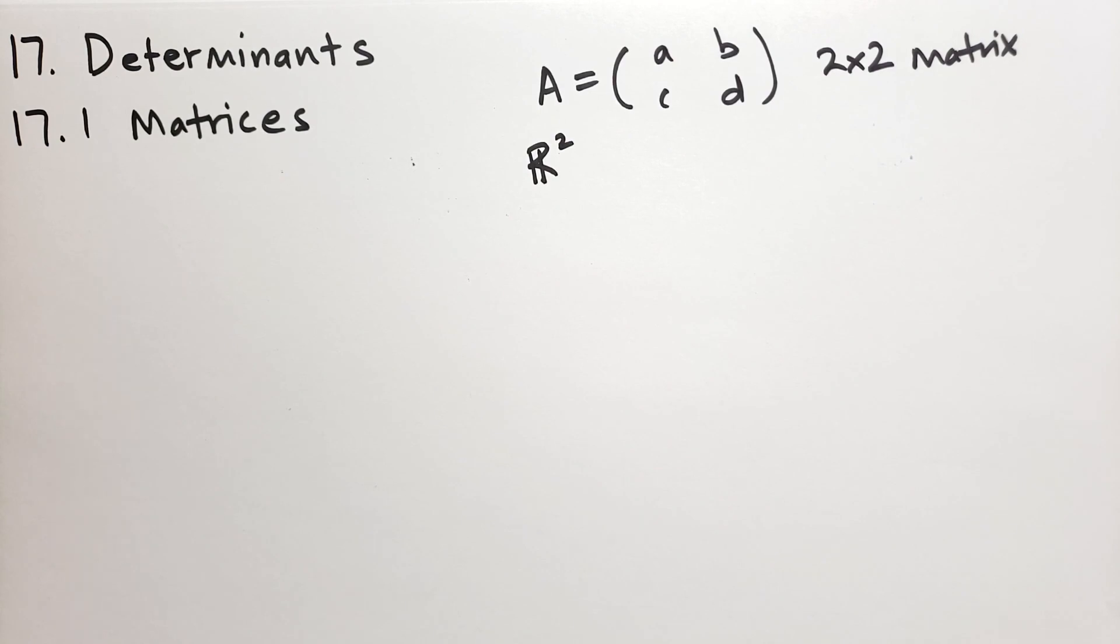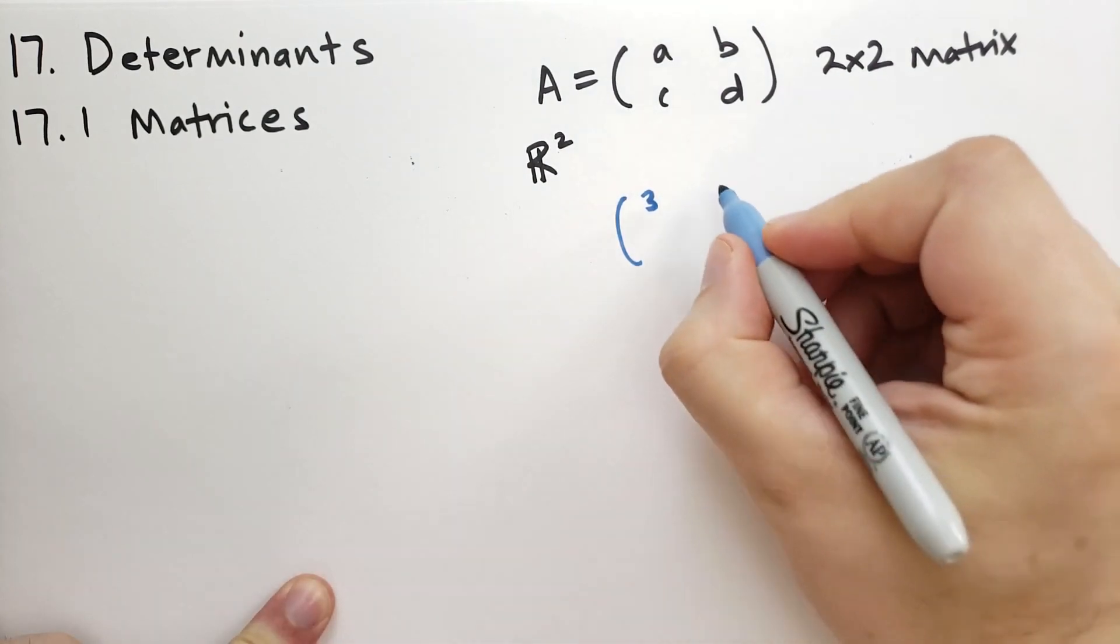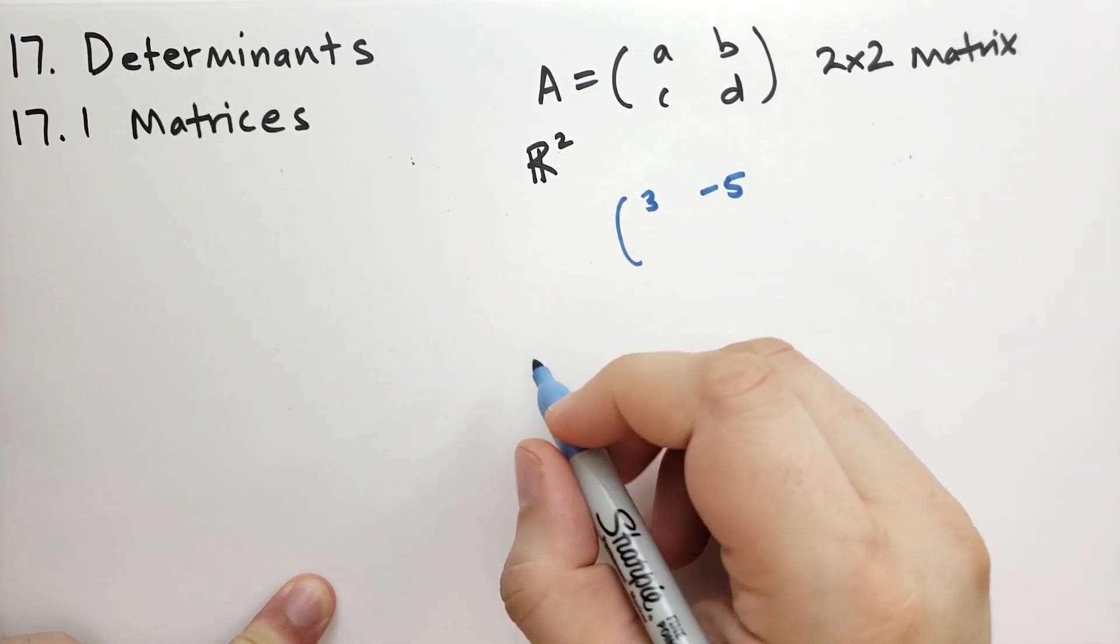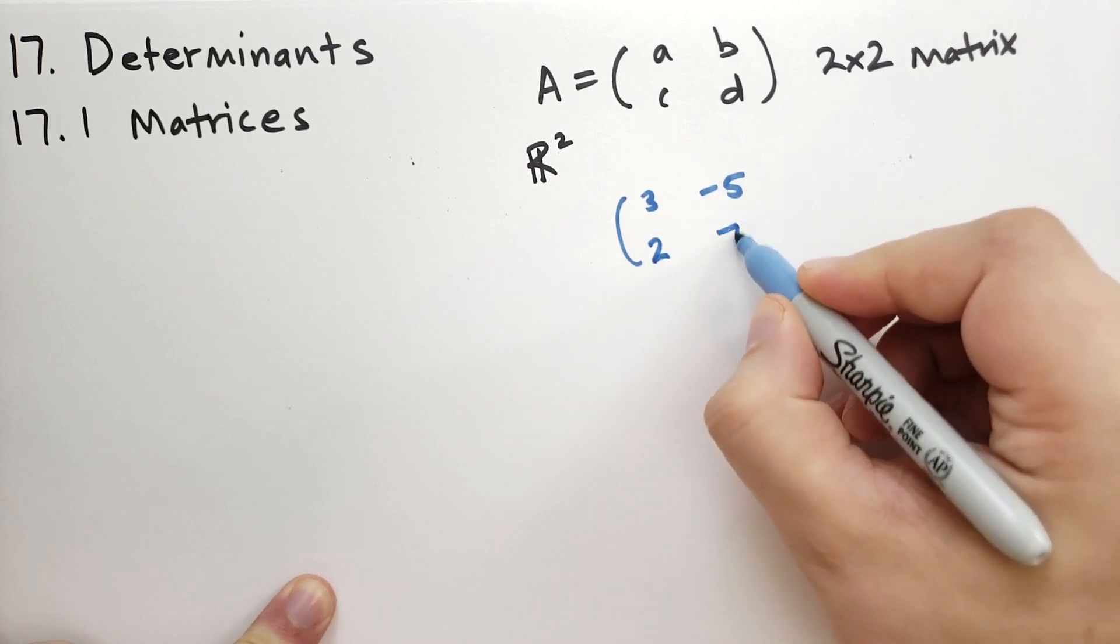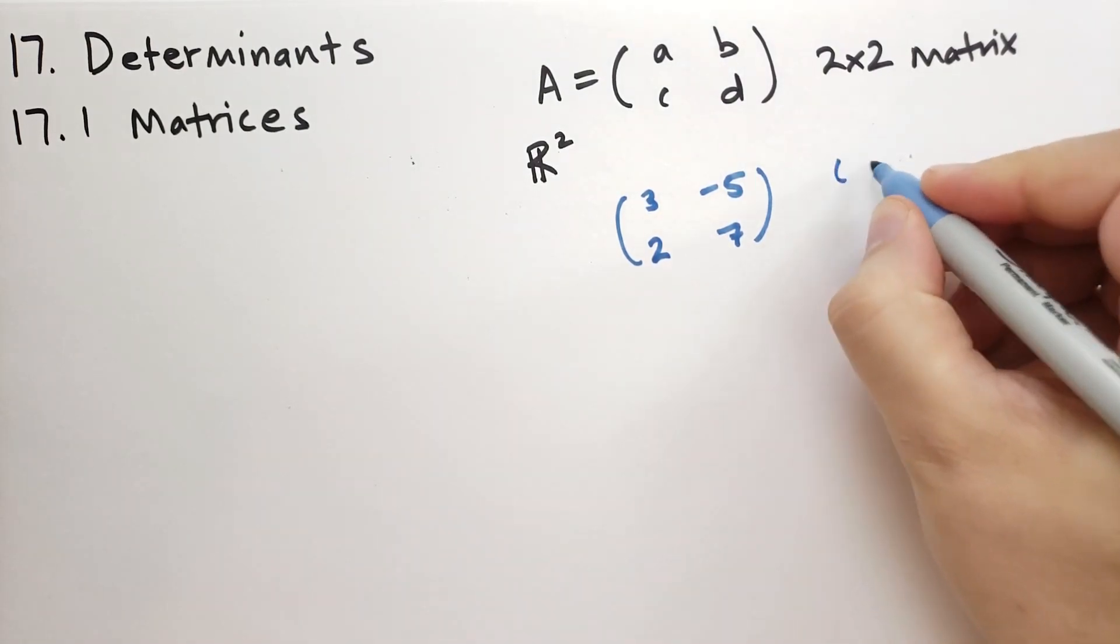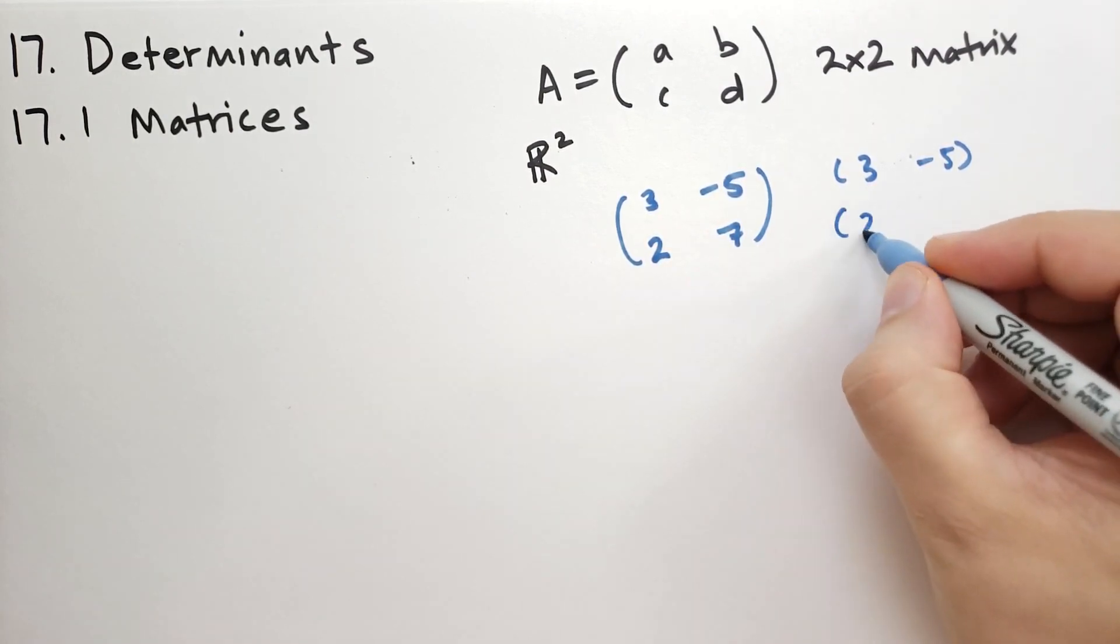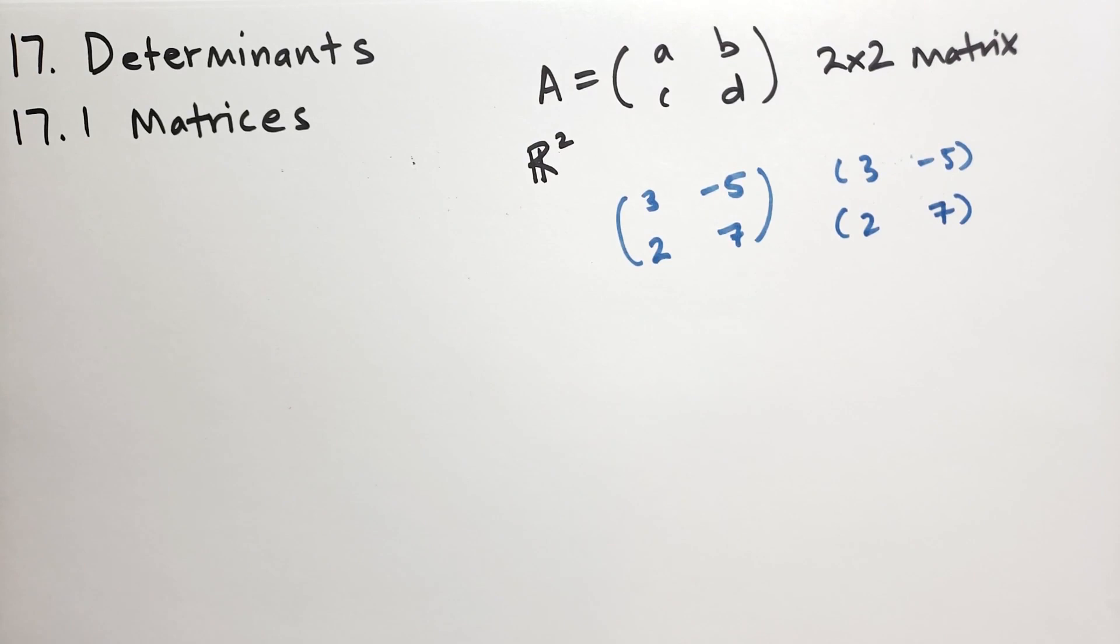In our 2x2 matrix, let's take an example and look at it in different ways. This 2x2 matrix has a 3 in the upper left-hand corner, minus 5 in the upper right-hand corner, and on the bottom it has a 2 on the left and a 7 on the right. There's many ways that we can look at this matrix. We have two rows, so we have the top row which is 3 and minus 5, that's a pair of numbers, and the bottom row which is 2 and 7.